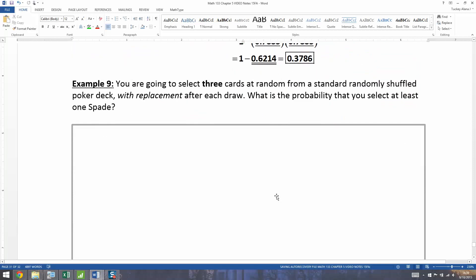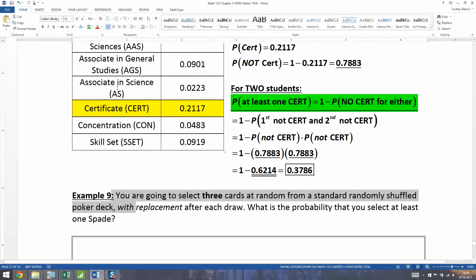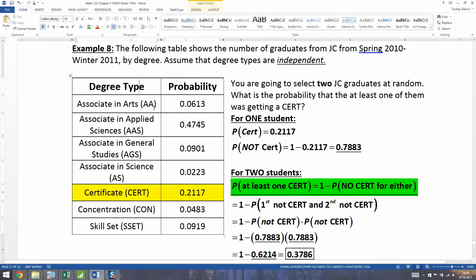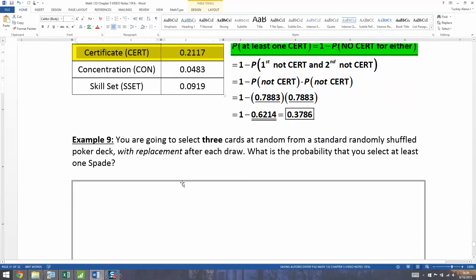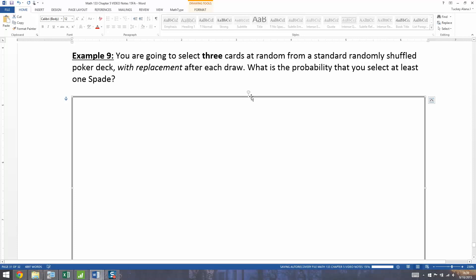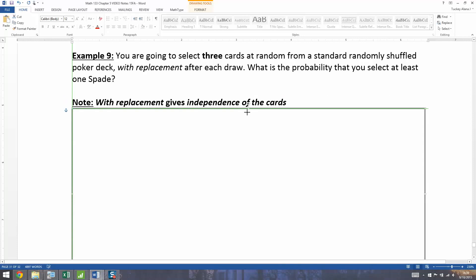All right, you're going to select three cards at random from a standard randomly shuffled poker deck with replacement after each draw. What is the probability that you select at least one spade? So this is a classical probability problem again, unlike this one up here, which was empirical probability because it came from data. So classical can be a little bit different because you have to really think about all the different possibilities. One key that I italicized here is the with replacement part. Now I didn't give you that for my health. I gave you that because I need you to know that the samples are independent or the cards are independent. So once you know it's independent, then you know you're going to be able to use the multiplication rule.